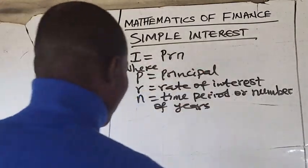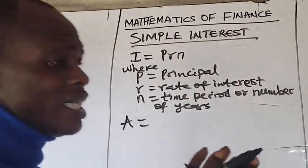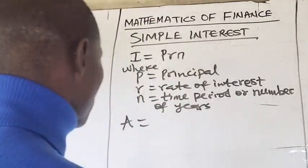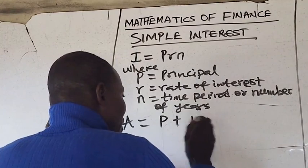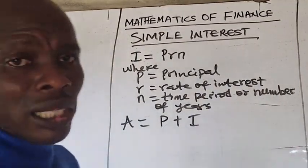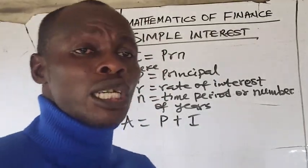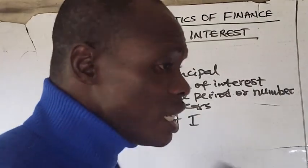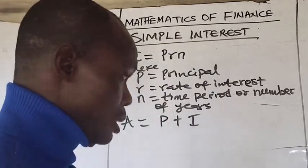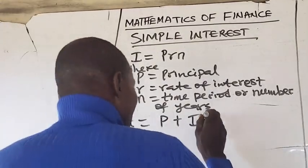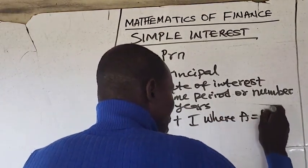To calculate the amount — that is, what a sum will be in the future — amount is calculated by summing up the principal and interest. The principal plus interest gives you the amount. So A equals principal plus interest, where A equals the amount.